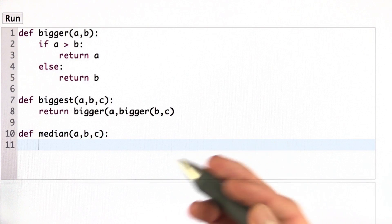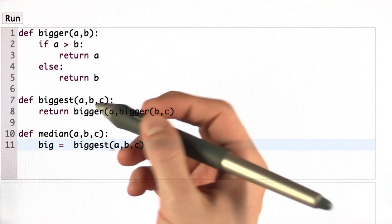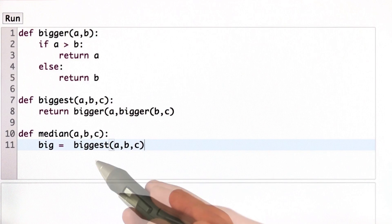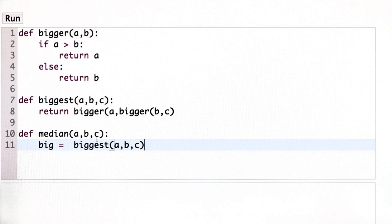As I described earlier, we want to find the biggest number first. Let's call it big. Here's the perfect time to use the function that we defined in class, biggest. Biggest will give us the biggest number, as the name describes, by simply passing in the three parameters.